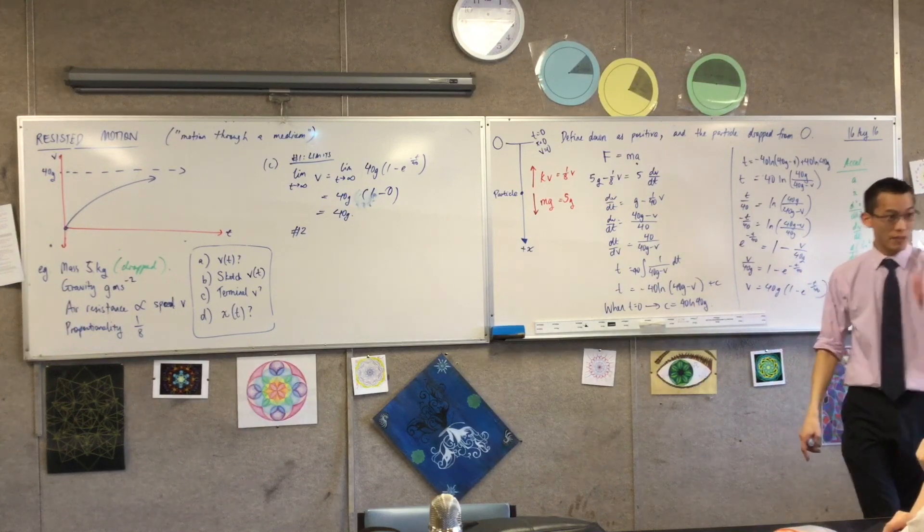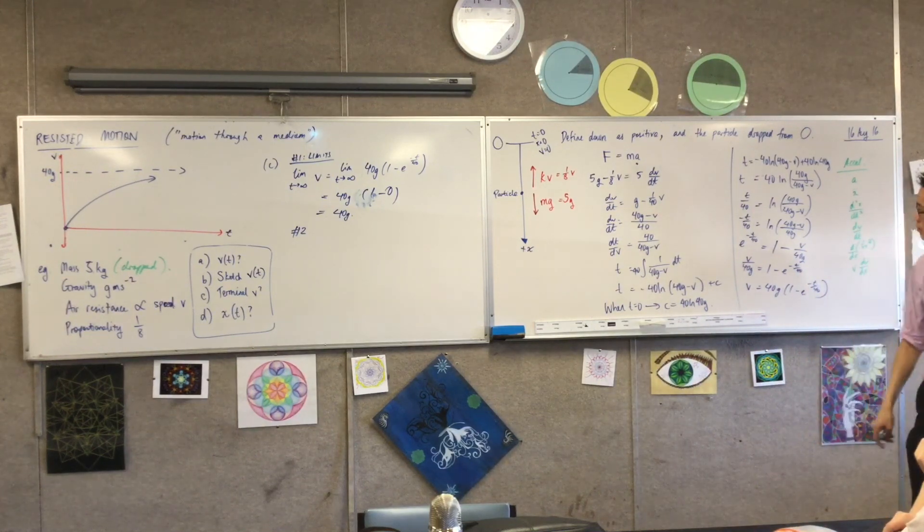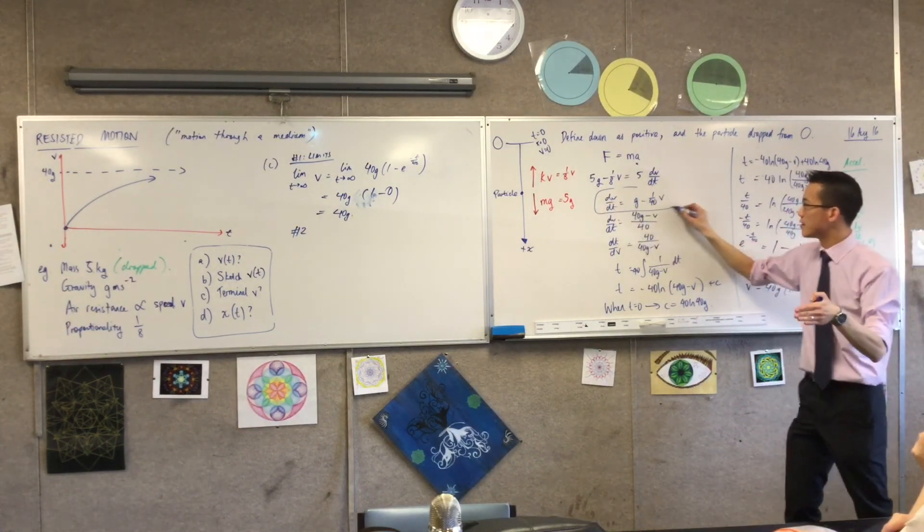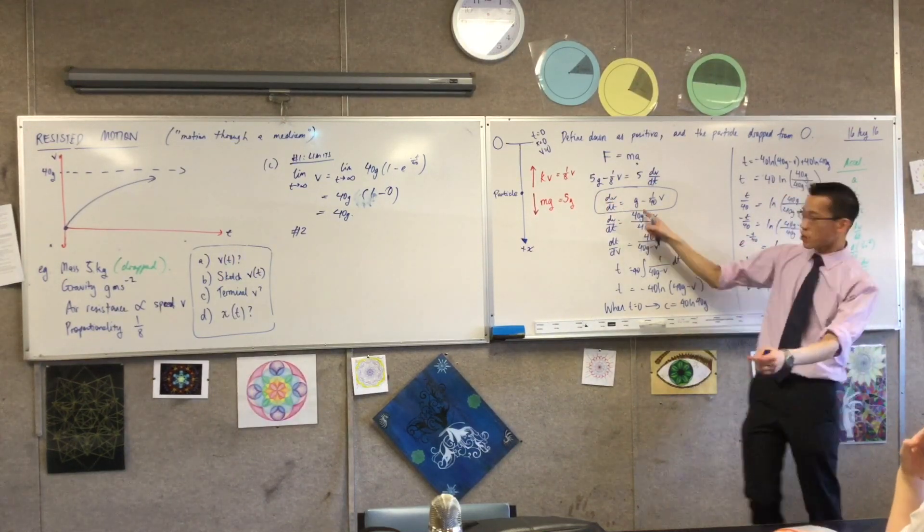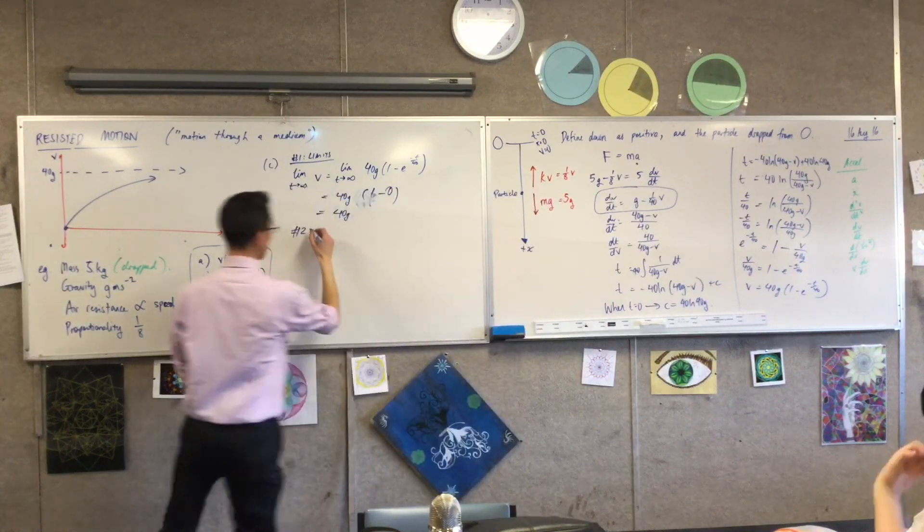that literally says acceleration is this. G minus 1 over 40V. That one, right? Do you see that there? We wrote this, we chose that so I could get to my velocity function. So I'm just going to go back to here and say number two, by the first law,